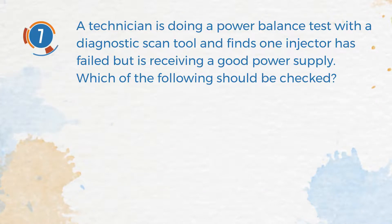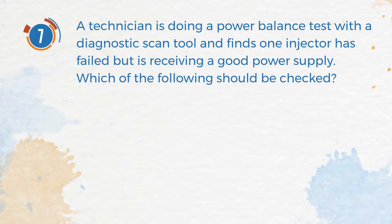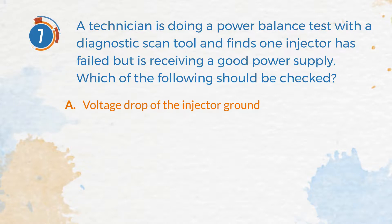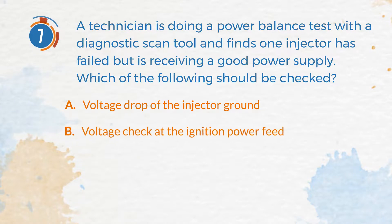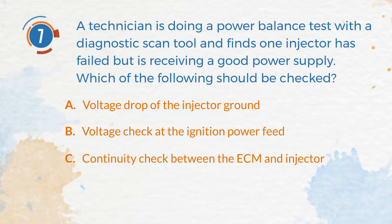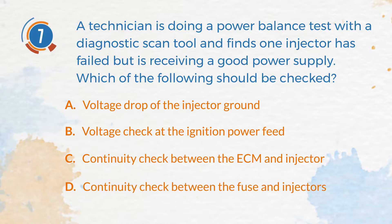Number 7. A technician is doing a power balance test with a diagnostic scan tool and finds one injector has failed but is receiving a good power supply. Which of the following should be checked? A. Voltage drop of the injector ground. B. Voltage check at the ignition power feed. C. Continuity check between the engine control module and injector. D. Continuity check between the fuse and injectors.